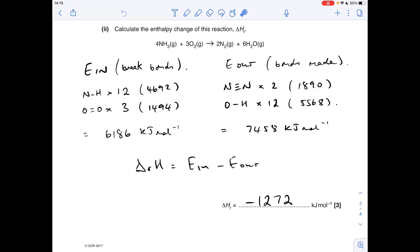One mole of H2O contains two moles of HO bonds, so six moles will contain 12. We multiply the OH value by 12, we get 5568, add them together to get 7458, and then we just do the in minus out. That gets us the enthalpy change for this reaction at minus 1272 kilojoules per mole.